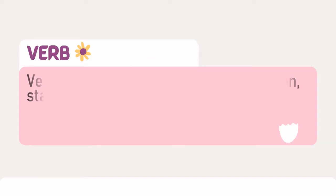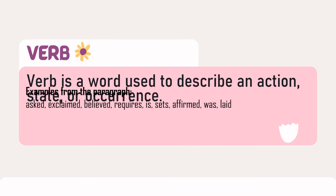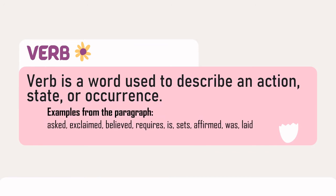Verb. A verb is a word used to describe an action, state, or occurrence. The examples we have are: ask, exclaimed, believed, requires, is, sets, affirmed, was, and laid.